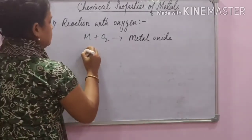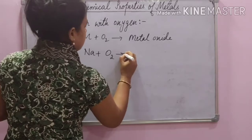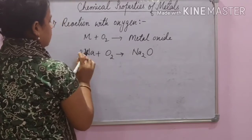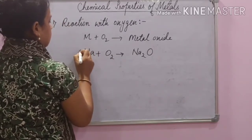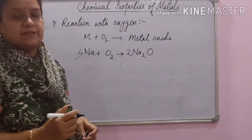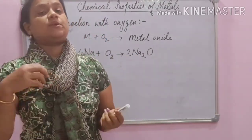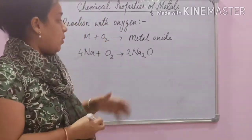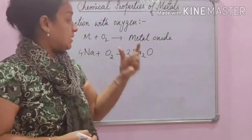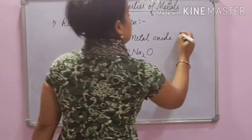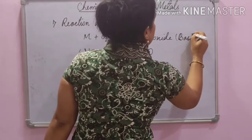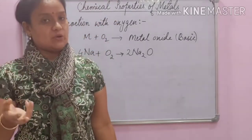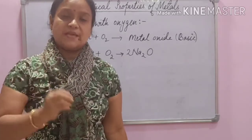For example, sodium reacts with oxygen to give sodium oxide. You can balance the reaction. Magnesium reacts with oxygen to form magnesium oxide and so on. You have to remember two points: number one, reaction of metal with oxygen forms metal oxide; and number two, these oxides are always basic in nature.